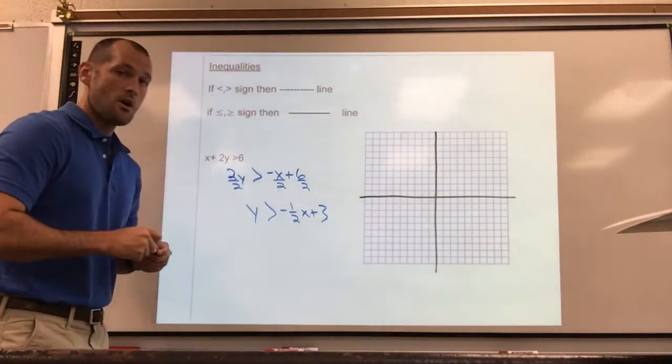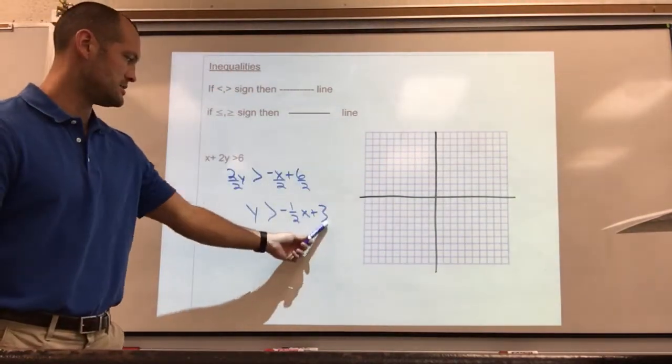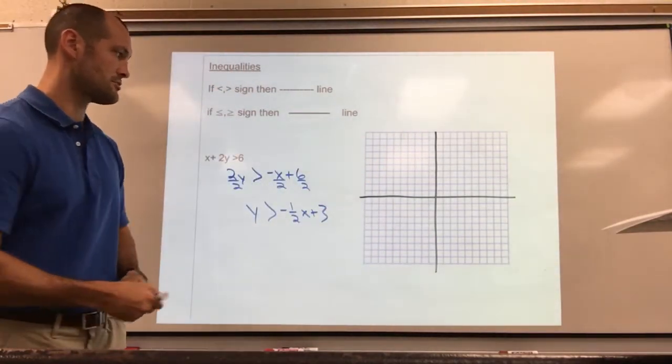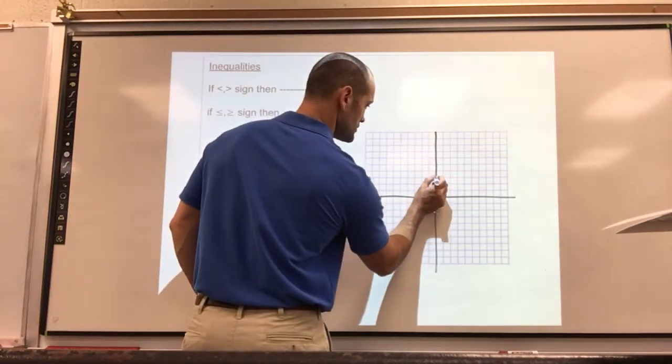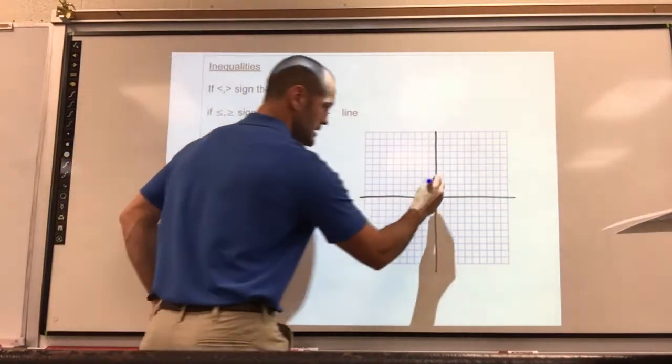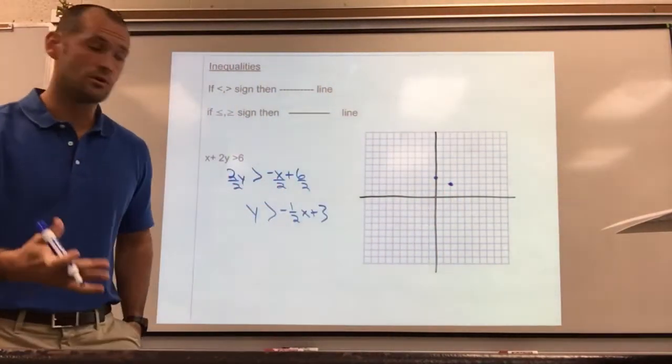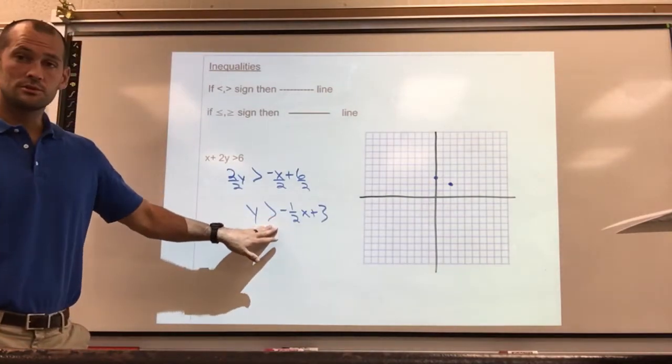All right, we approach it the exact same way, like we're graphing a line. There's my intercept, there's my slope. So I start at 3, and I have a negative one-half slope, so I'm going to go down one, right two.